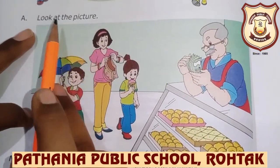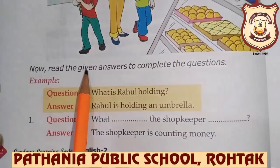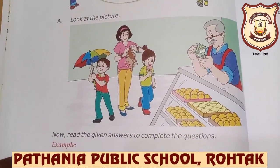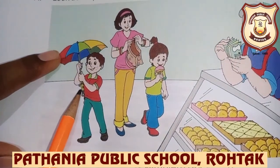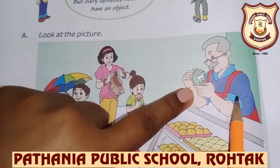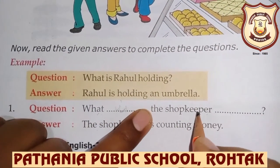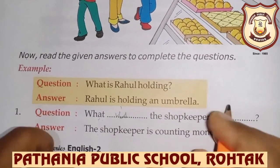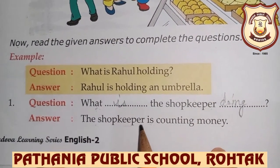Now let's revise with the picture. Read the given answer to complete the question — thoda sa change hai, you have to write the question. Answer diya hai, aur humme questions banane hain. Example: What is Rahul holding? Rahul is holding an umbrella. Next: the shopkeeper is counting money. Question kya banega? What is the shopkeeper doing? Answer: the shopkeeper is counting money.